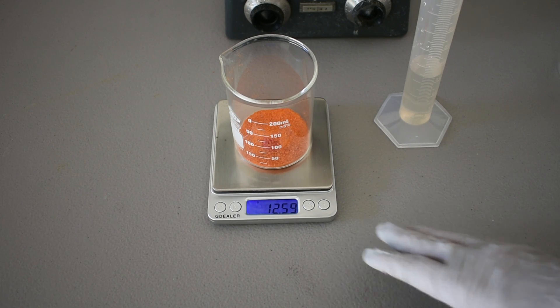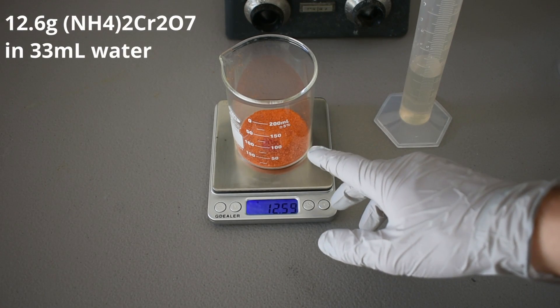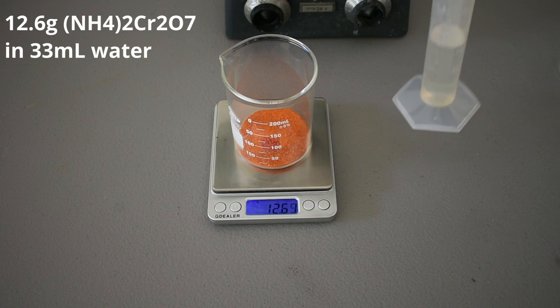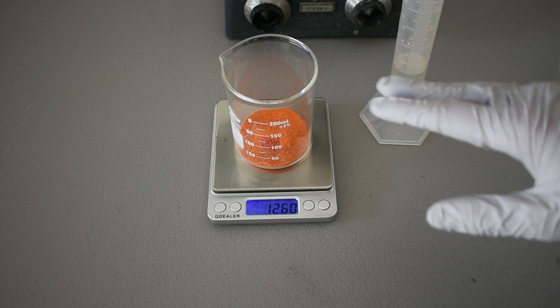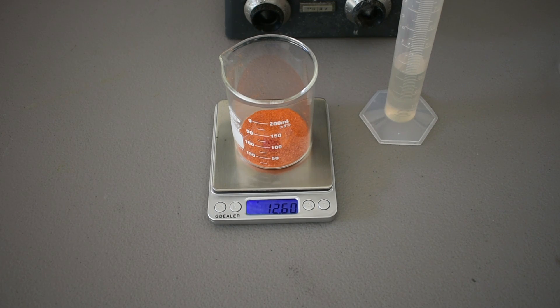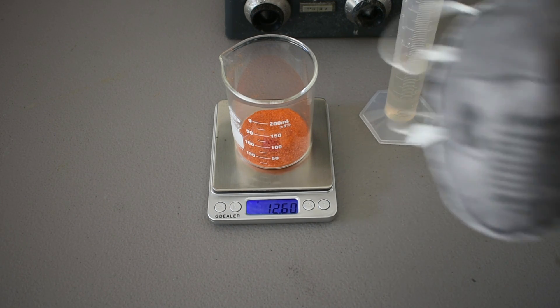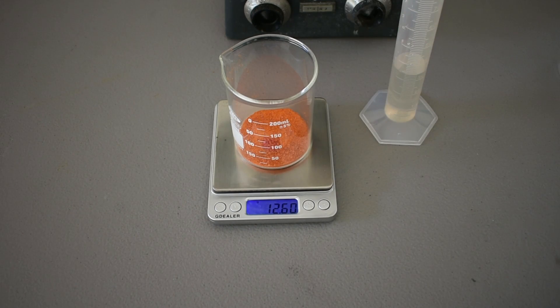Alright, so I've weighed out about 12.6 grams of the ammonium dichromate, and we're going to dissolve that in about 33 milliliters of water. And make sure you're careful when you're pouring the dichromate. You really don't want to be inhaling that dust, so make sure you're wearing a mask. It is a proven carcinogen, of course.